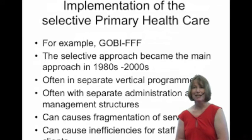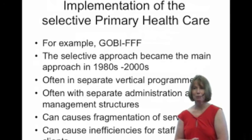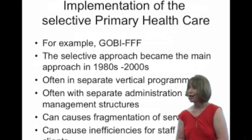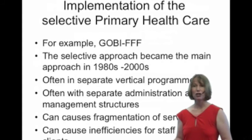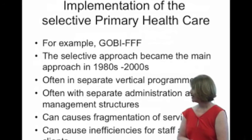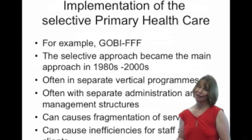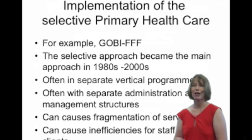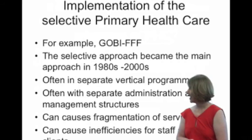The selective primary health care approach is often — not always, but often — implemented in separate vertical programmes. These vertical programmes have their own separate administration, management and supply systems. A good example is immunization programmes, which run as parallel programmes to the health service. They do extremely good work immunizing children, but being separate from the rest of the health service can cause fragmentation: a sick child comes in, can't be immunized, but also can't be treated and has to be sent to another service — leading to inefficiencies for both staff and clients.